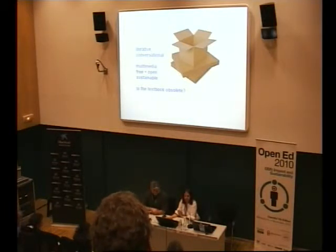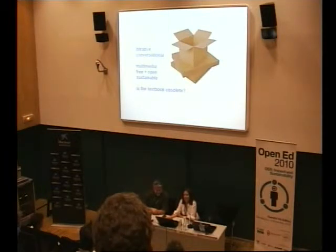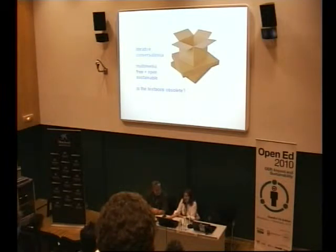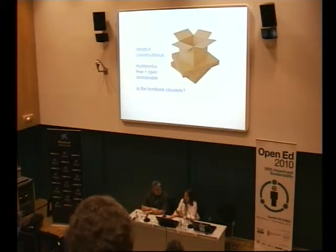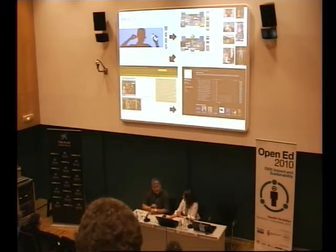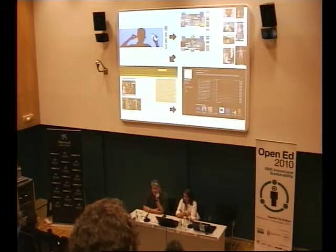When we say scrappy, we mean really scrappy. Smart History started as a WordPress site with no support or grant funding, and has continued with a small grant of $20,000. Now we operate with almost no overhead. That iterative model has been wonderful.